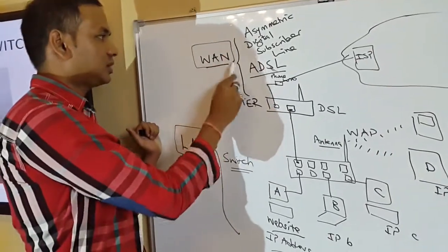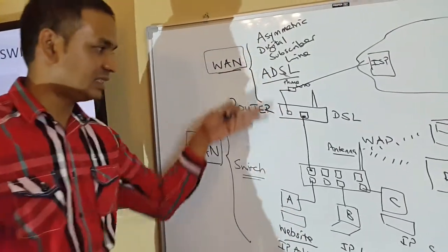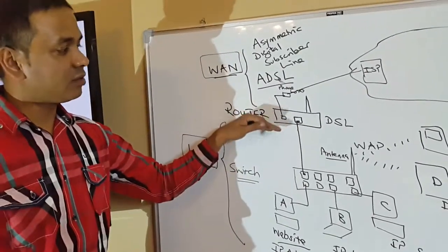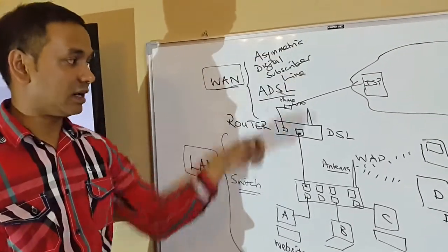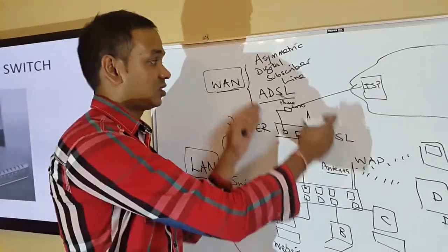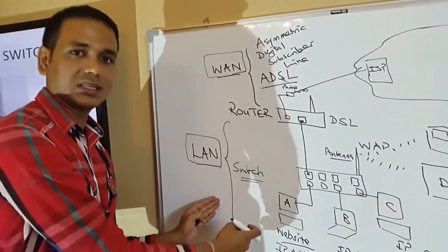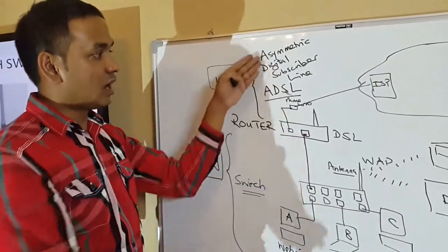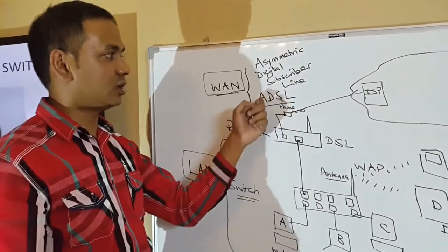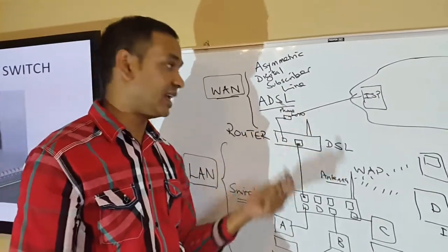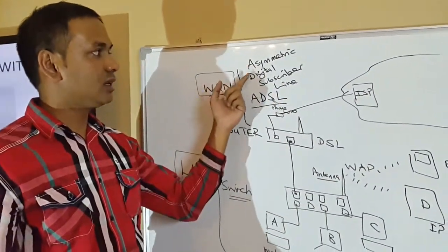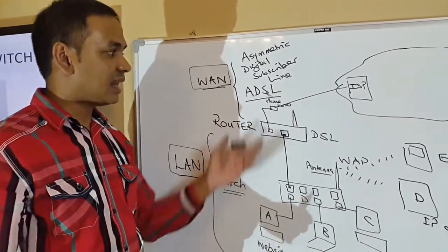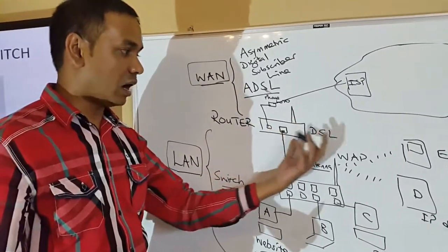Everything which is inside the router is called the LAN. You see the difference between the LAN and the WAN: the LAN is everything inside the router, and everything that goes beyond the router is the WAN. The device that connects the WAN and the LAN is called the router.